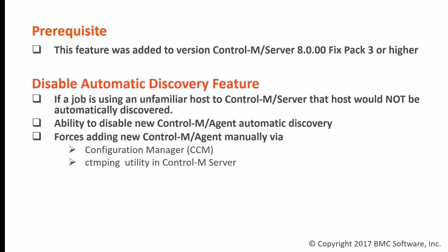For environments where this functionality is not desired, Control-M server now provides the ability to disable the Control-M agent automatic discovery. This feature is enabled by setting the configuration parameter host_auto_discover to N through the Control-M Configuration Manager, or CCM. Once configured, if a job is using an unfamiliar host, it won't be automatically discovered. In other words, the new Control-M agent can only be added manually through the CCM or CTM ping utility.